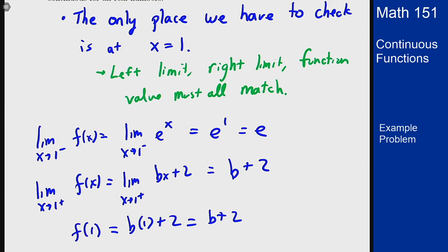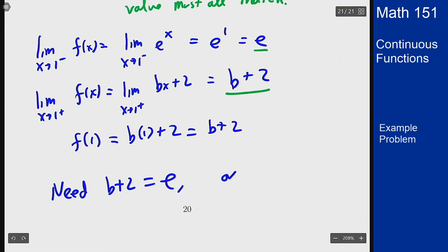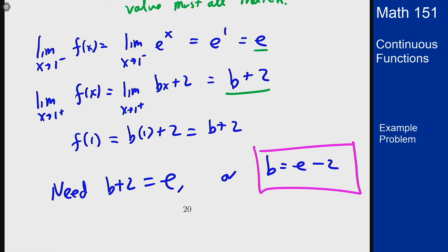Now, for this to be continuous, I need all these things to match. So, in particular, I need b plus 2 to equal e, or b to equal e minus 2. That's how you solve for this constant to make this function continuous.